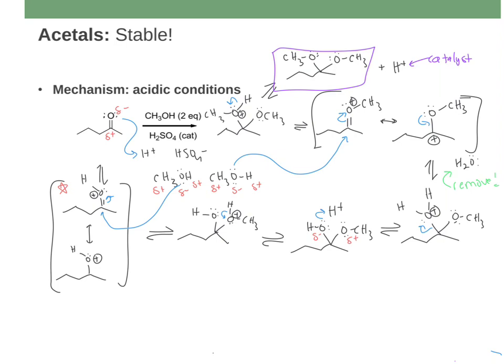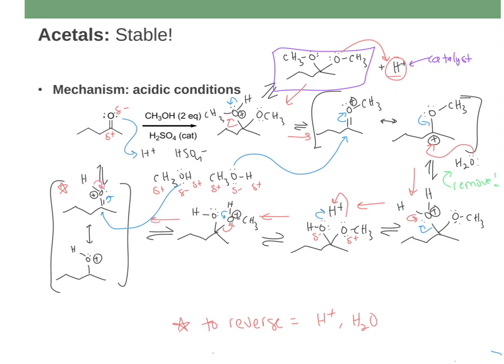To undo an acetal — to remove it and go back to the parent carbonyl — you add acid and water. Looking at this mechanism, you can see why: adding acid makes the first step go backwards, then your methanol that you just protonated can leave, then water can add back in, then it can lose an H, then the O-methyl can pick it up and leave as methanol, then you have your carbonyl which can lose an H — and that gets you all the way back to your product. It's exactly the same mechanism, just everything in reverse.